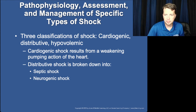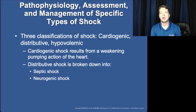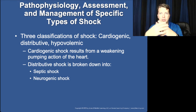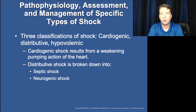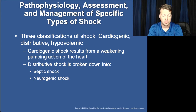Cardiogenic is anytime there's a problem with the heart — anytime the pump is the failure of the system. Distributive is anytime there's a problem with the vessels themselves, so the vessels are dilating out, whether that's through sepsis/infection, neurogenic dilation due to lack of sympathetic tone, or anaphylaxis due to an increased release of histamines. Those are all various causes of distributive shock.